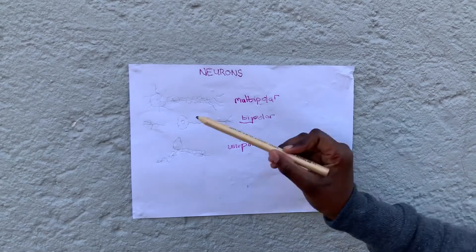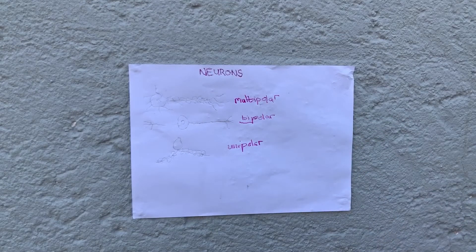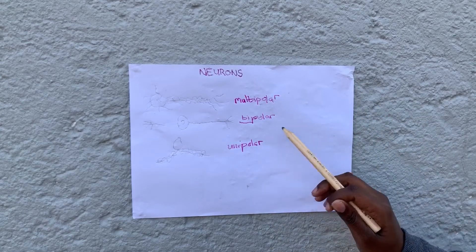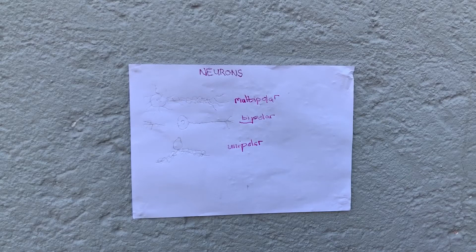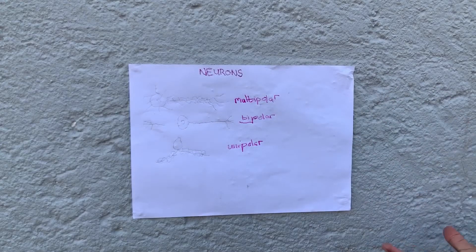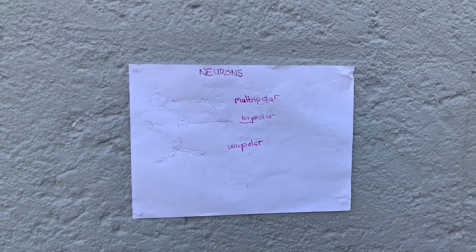A motor neuron is a multipolar neuron, and an interneuron is also a multipolar neuron. A unipolar neuron is the sensory neuron. So if a question asks for the three neurons according to structure, you say multipolar, bipolar, and unipolar, and draw them accordingly with labels.